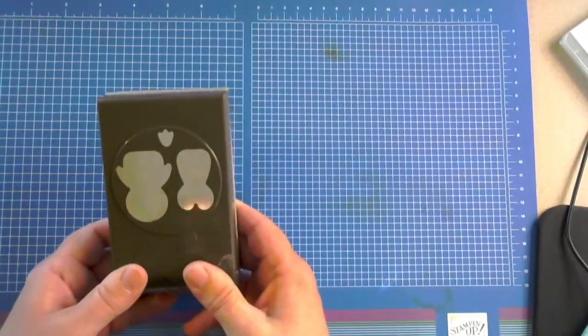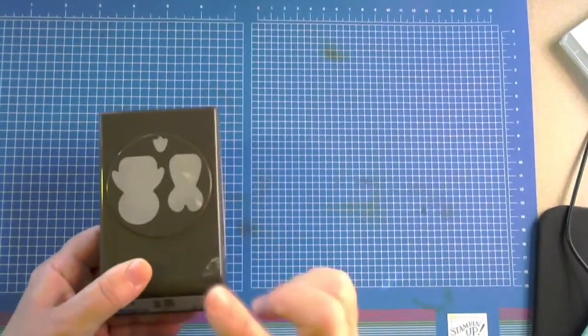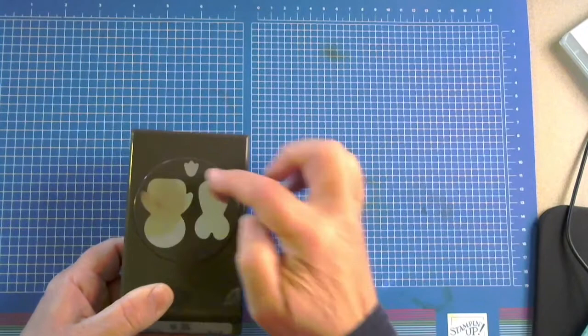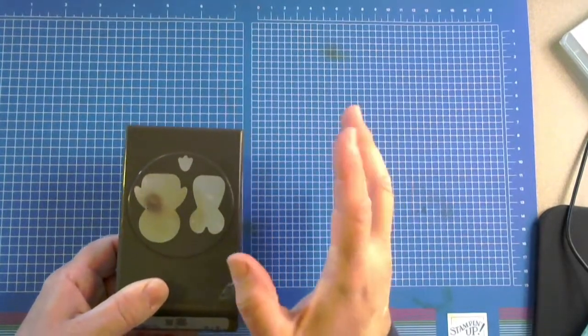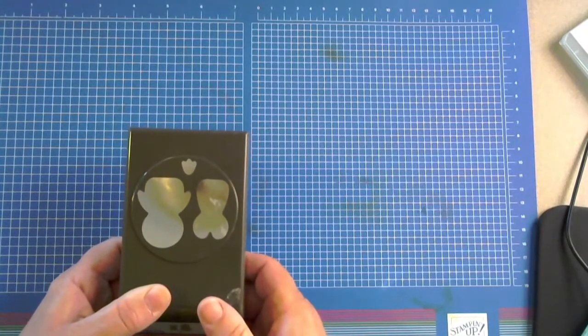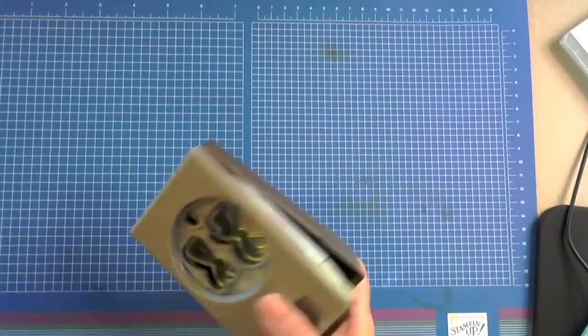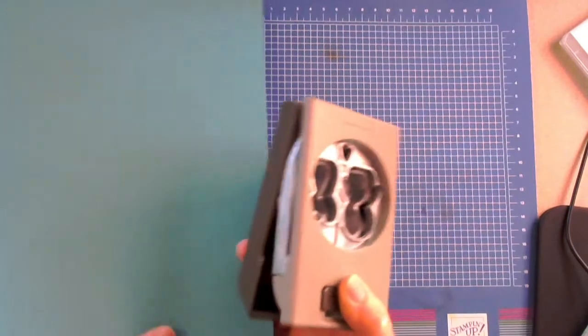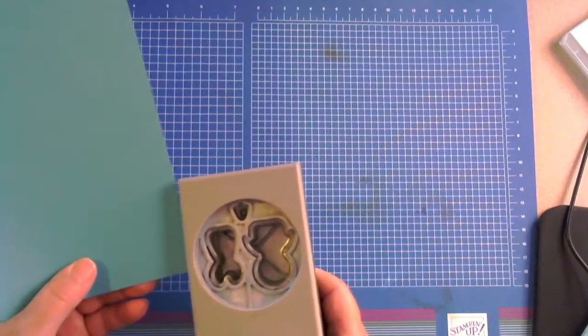So to create the flower pot we're going to start with our penguin punch. We're going to be using this portion of it and the little foot to make the flower petals or flowers themselves. So let's start with a piece of Bermuda Bay paper, and you're not even going to waste very much paper because you're going to slide this in using the pot